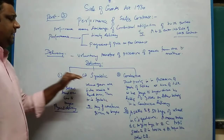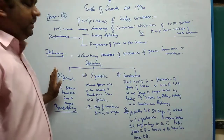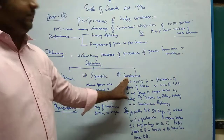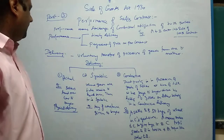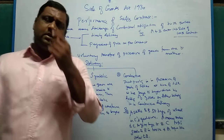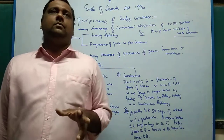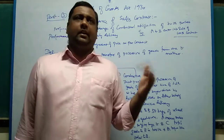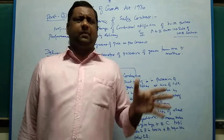Delivery is divided into three basic categories as per the Sale of Goods Act. One is actual delivery, second is symbolic delivery, and third is constructive delivery.